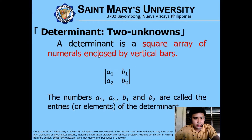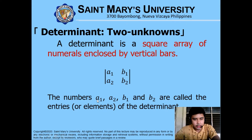So what is a determinant? A determinant is a square array of numerals enclosed by vertical bars. As you can see here, the symbol for a determinant contains entries a sub 1, a sub 2, b sub 1, and b sub 2. These numbers are called the entries or elements of the determinant.